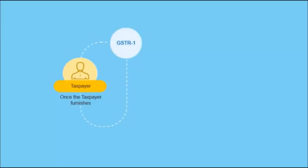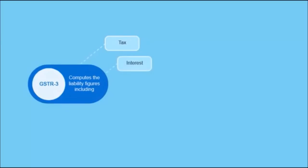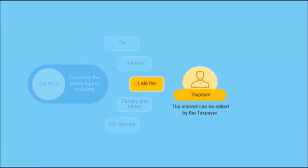Once the taxpayer furnishes GSTR 1, GSTR 1A where applicable, and GSTR 2, the GSTR 3 statement can be generated. GSTR 3 computes the liability figures including tax, interest, late fee, penalty and others along with ITC claimed if any. The interest on account of late payment and ITC reversal can be edited by the taxpayer.